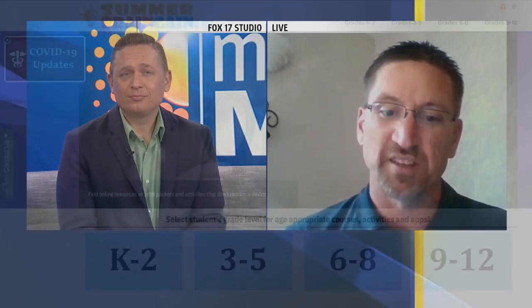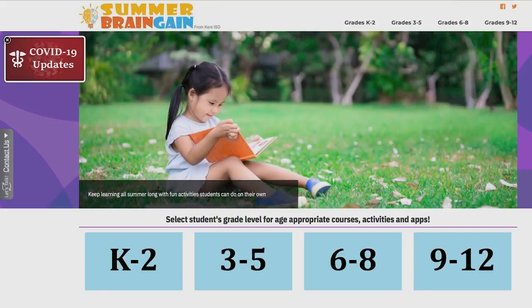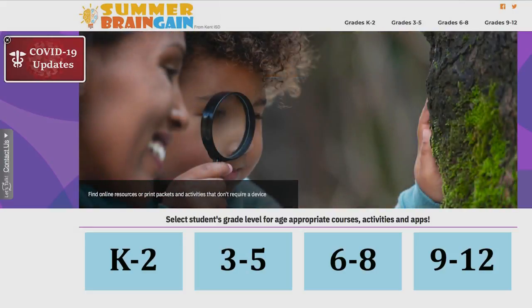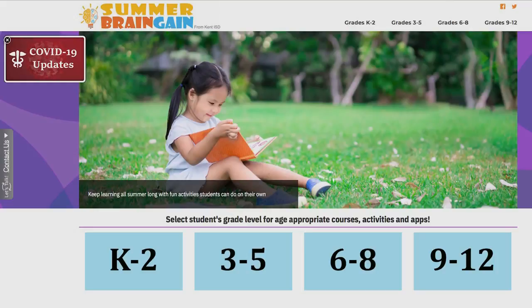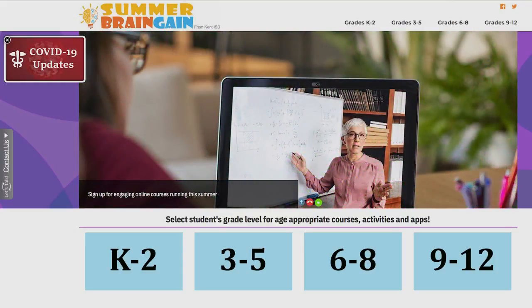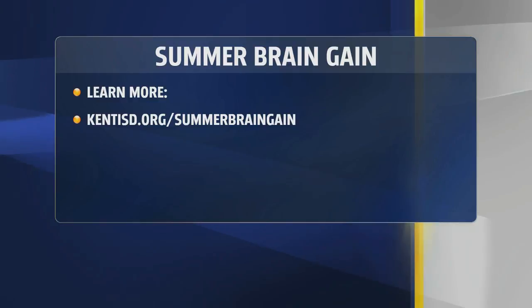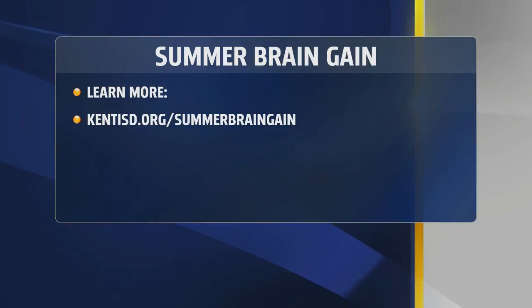This is free access to all of these programs. The website is kentisd.org/summerbraingain. When you get there, you're going to see a lot of different options for different grade bands — K through 2, 3 through 5, 6 through 8, and 9 through 12. Think about the grade your child will be going into when you visit. You'll see options for the GRASP program, the camp or summer electives, and we also have a section for apps and websites. There's a community partnership area supported by the School News Network — we're promoting programming at the Van Andel Institute, Grand Rapids Public Museum, and John Ball Zoo, just to name a few.